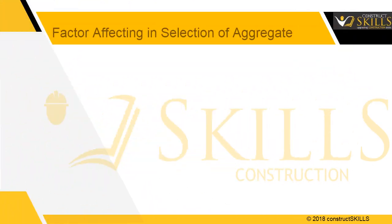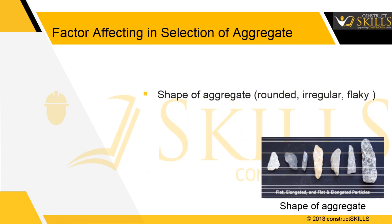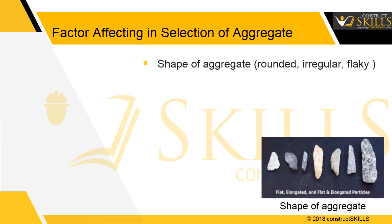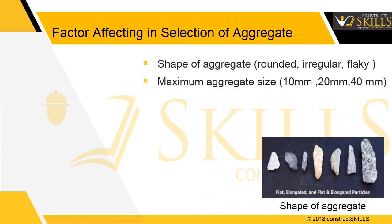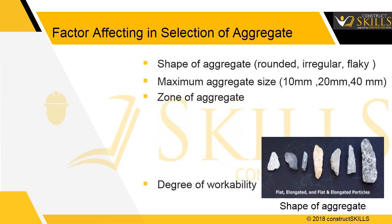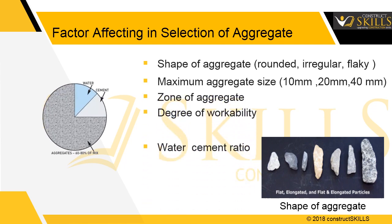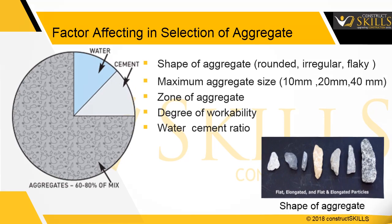The factors affecting the selection of coarse aggregate are: shape of the aggregate (like rounded, irregular, or flaky), maximum coarse aggregate size, sand particle sizes, degree of workability required, and the amount of permissible water-cement ratio.